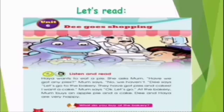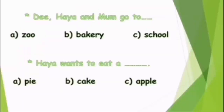'They have got pies and cakes. I want a cake. Mom says okay, let's go to the bakery.' Mom buys an apple pie and a cake. D and Higher are very happy. D, Higher and Mom go to the bakery.